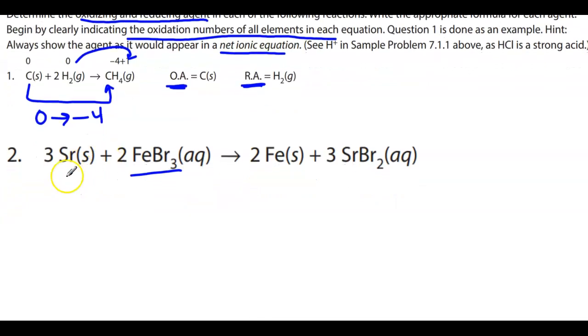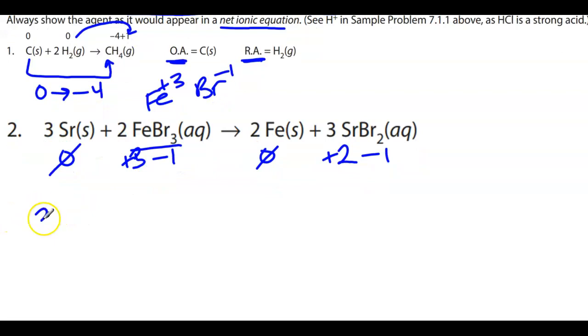So let's take a look at number two. Strontium is in its elemental state. That's a zero. So this is iron-3-bromide, right, so bromine is just, it's basically an ionic compound, right? So iron-3 and bromine negative one. Iron in its elemental state is zero, and here we have strontium bromide. So what they mean by putting this in the net ionic, would be to write this out with eliminating the bromine because it's a spectator.